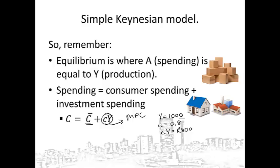Investment spending can be represented by I equals I-bar. Investment is entirely autonomous, meaning firms' decisions to invest are not dependent on the level of income in the country. So no matter what the level of income, investment spending stays the same. Investment spending is therefore totally autonomous, which is why we indicate it with a line above the I.